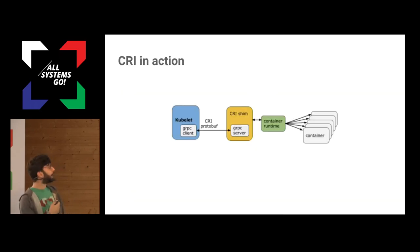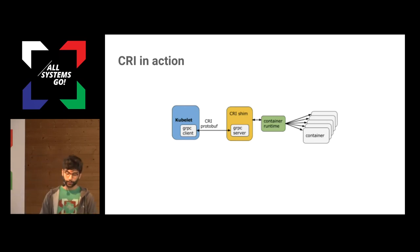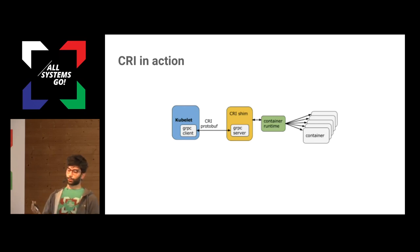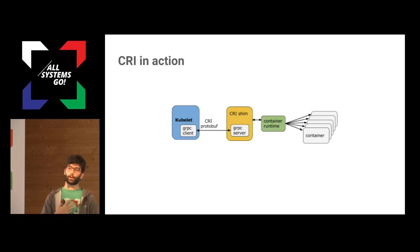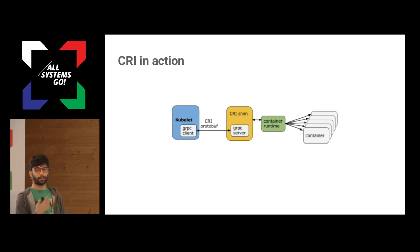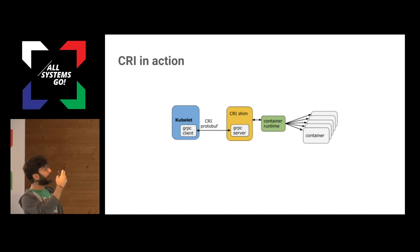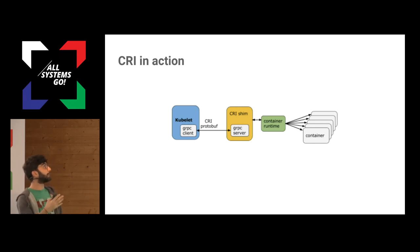This is an overview of the CRI in action. You can see on the left side we have the kubelet, which is implementing just the gRPC client. And it talks to, in this case, a CRI shim. This is the default when running with the Docker runtime. The CRI shim is a daemon implementing the gRPC server. And then on the right side, we do have the container runtime and all the containers.